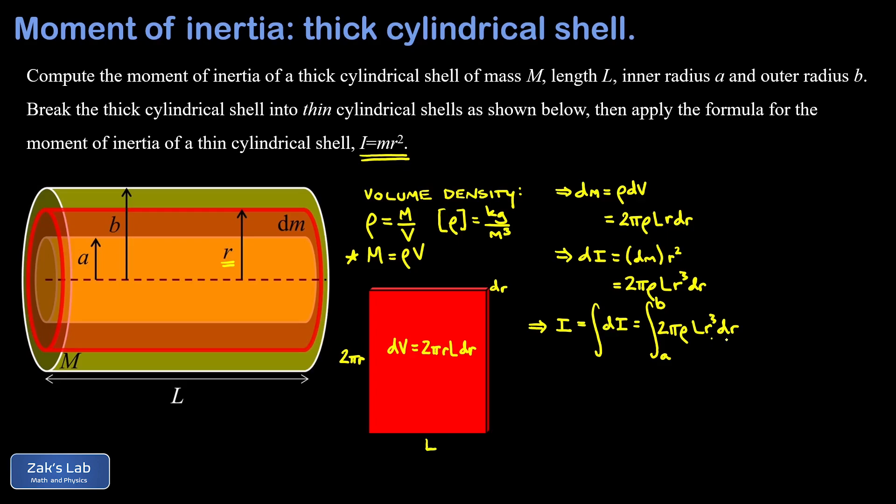The only variable is r. I'm integrating r³, which gives me one-fourth r⁴, and I can cancel a factor of two, so my constant out in front is one-half. I have one-half πρL r⁴ evaluated from a to b. Plugging in the upper and lower limits, I end up with one-half πρL times the quantity b⁴ minus a⁴.